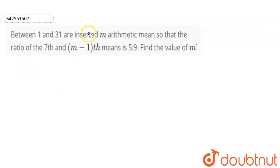Between 1 and 31 are inserted m arithmetic means so that the ratio of the 7th and (m-1)th means is 5 to 9. We have to find the value of m.